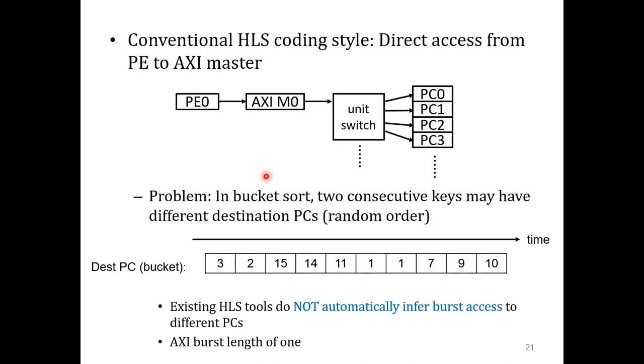But in the bucket sort, two consecutive keys may have a different destination PC. As a result, HLS tools were not able to automatically infer burst access. This leads to a low-effective bandwidth problem.